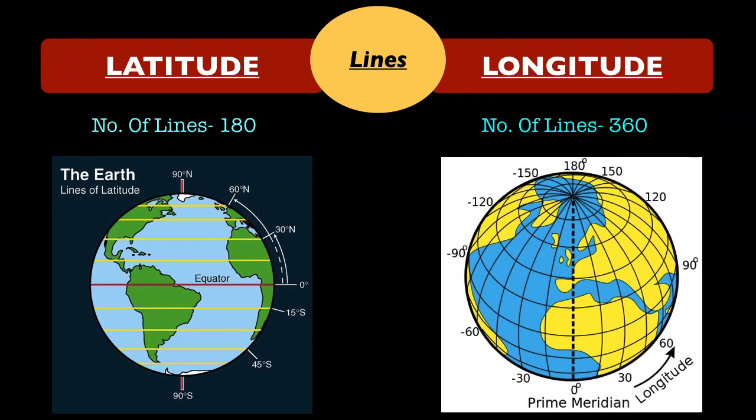The next difference is the lines. Total number of lines of latitudes are 180 whereas the total number of longitude lines are 360. You can clarify this idea from the given images.